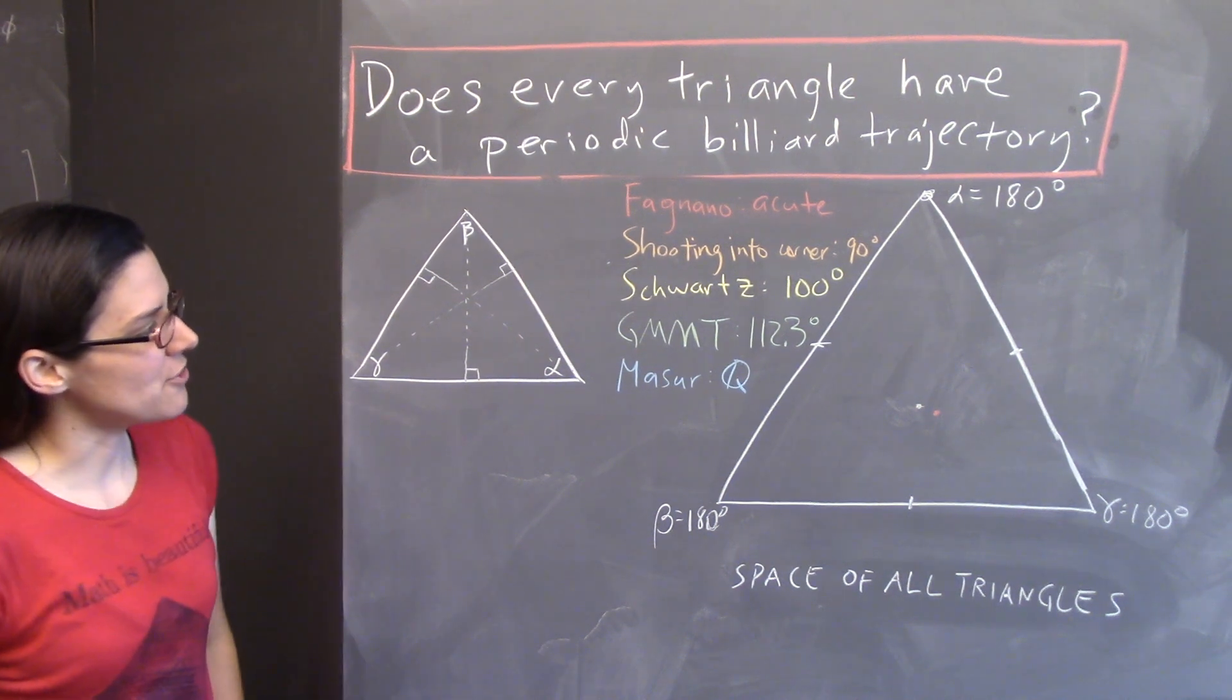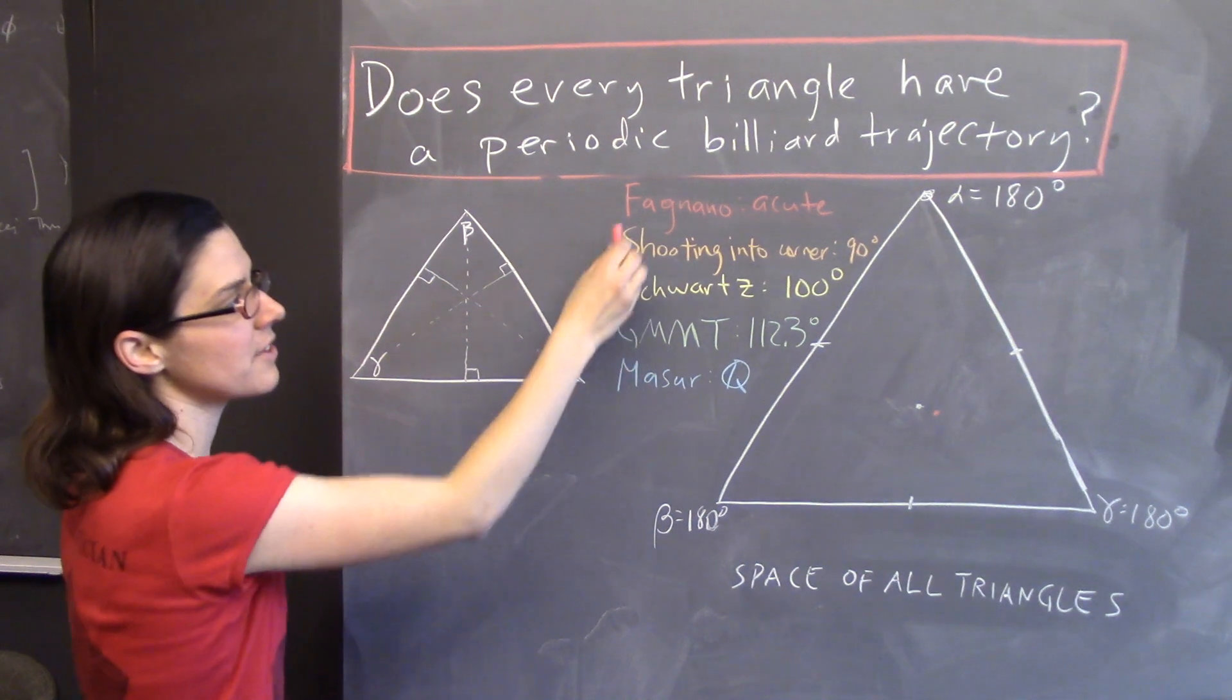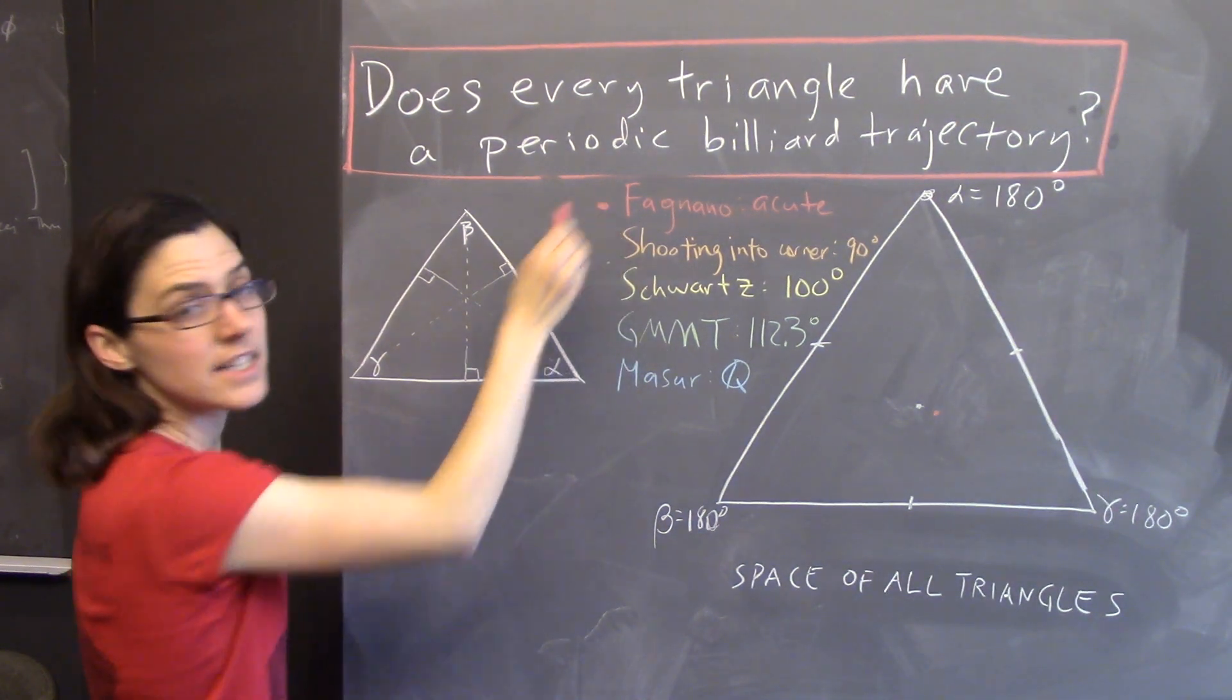Now, here's an acute triangle. It has a periodic billiard trajectory called the Fagnano trajectory. Here's what you do.